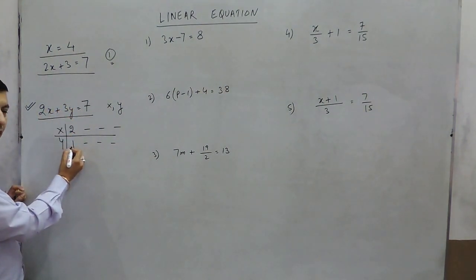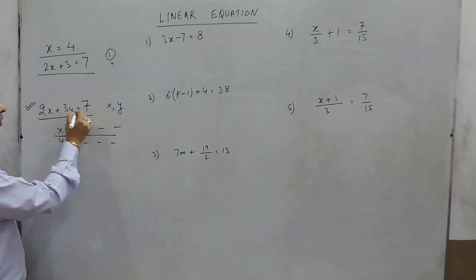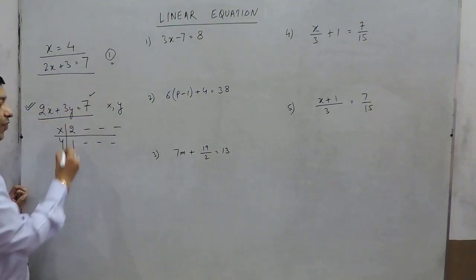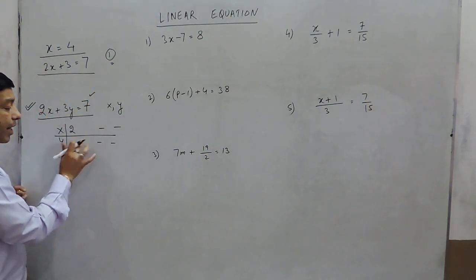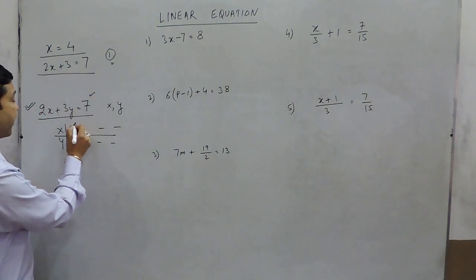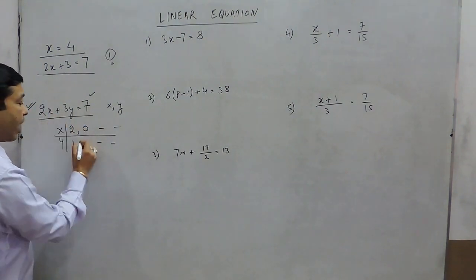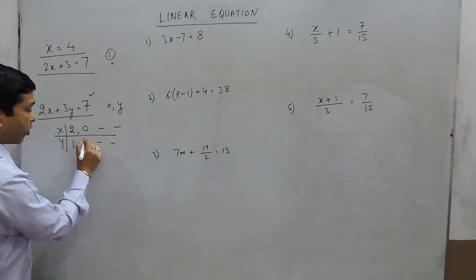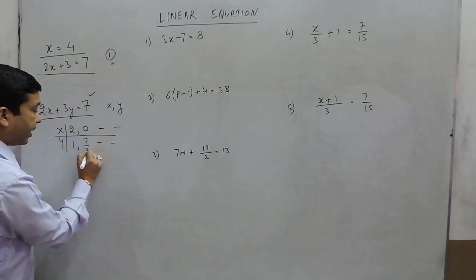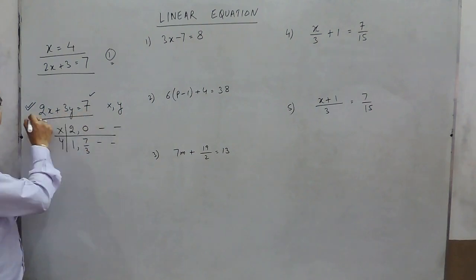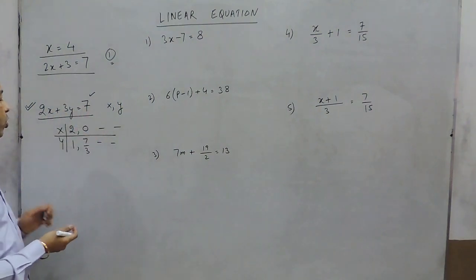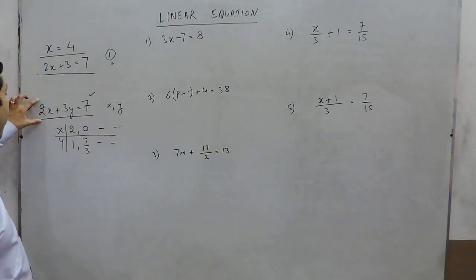Or we could take x equals 0 and y equals 7 upon 3 — this value also satisfies the equation. So there are multiple solution pairs.